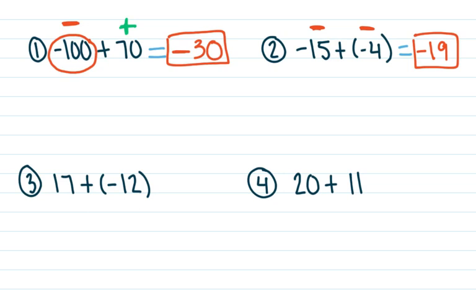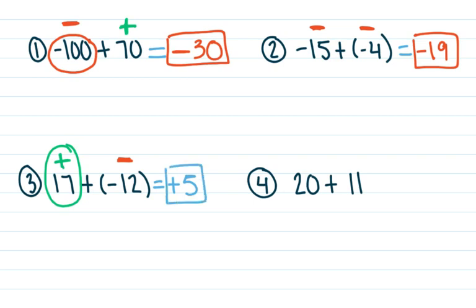Take a look at number three: I have a positive 17 and a negative 12. Think about which number has the greatest absolute value — which number is furthest from zero, or which has the bigger army. There are 17 positives, so 17 has the bigger army, which means my answer is going to be positive. Every one of those negative 12s is going to cancel out one of the positives in the 17 — those are zero pairs. Negative 12 takes out 12 positives, and I am left with 5 positives. So my answer for number three is a positive five.